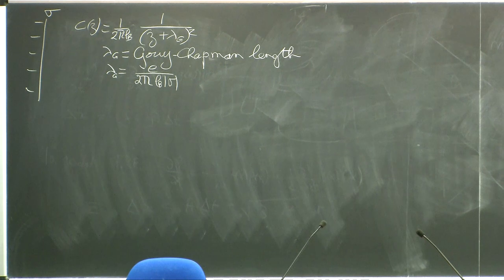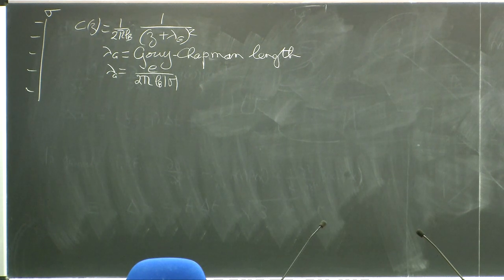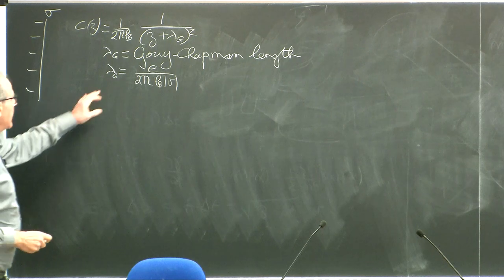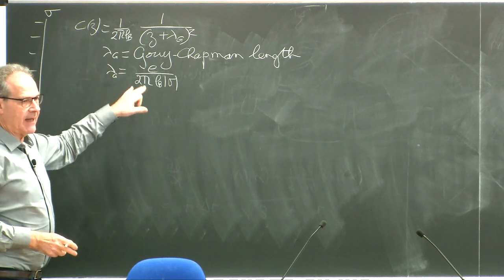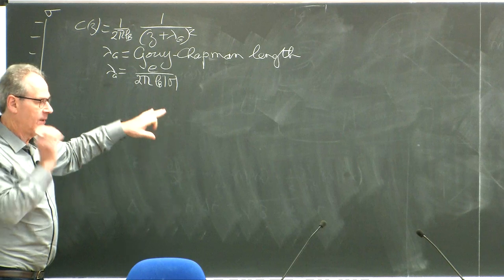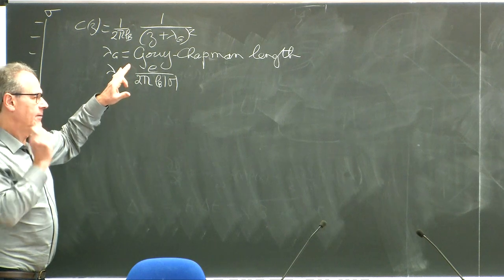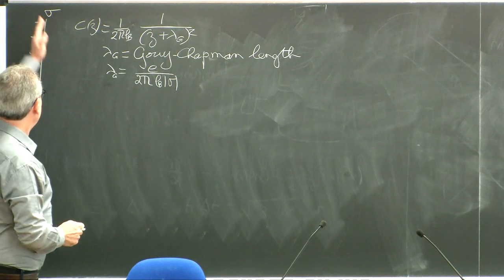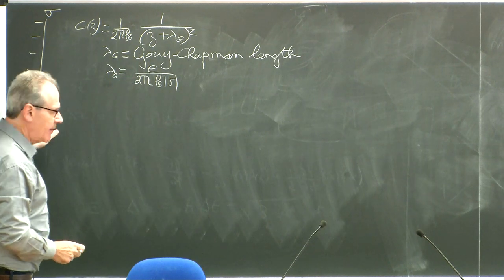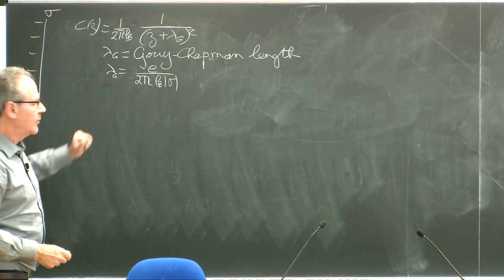Somebody asked me what is the interpretation of lambda_G, so let me clarify. Lambda_G is the distance at which the electrostatic energy of a particle is equal to k_B T.